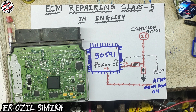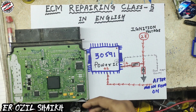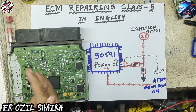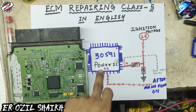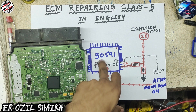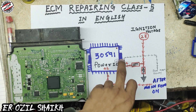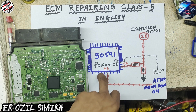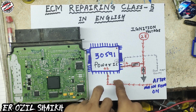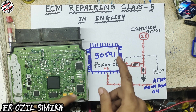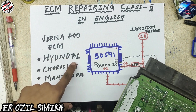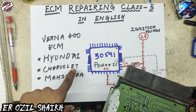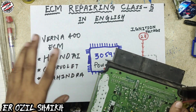Hi everyone, this is Ozil. Today's class is ECM Repairing Class 5 in English. I am discussing the power IC 305-30591. This power IC is used in many ECMs, for example Honda ECM, Sharevalet ECM, and Mahindra ECM.